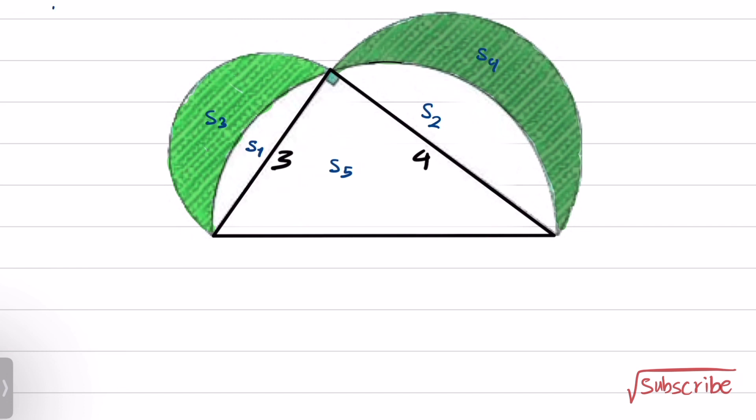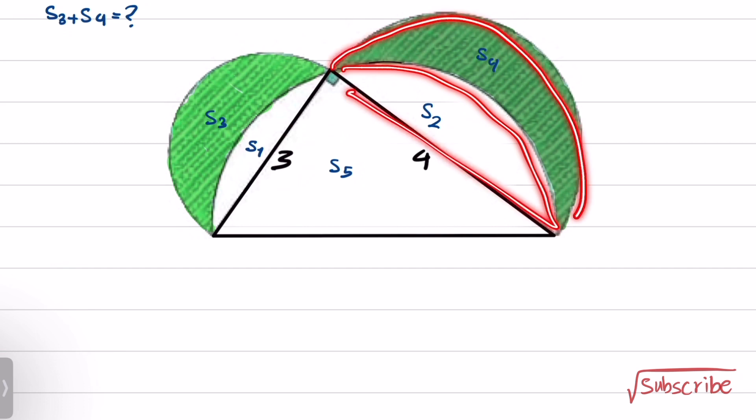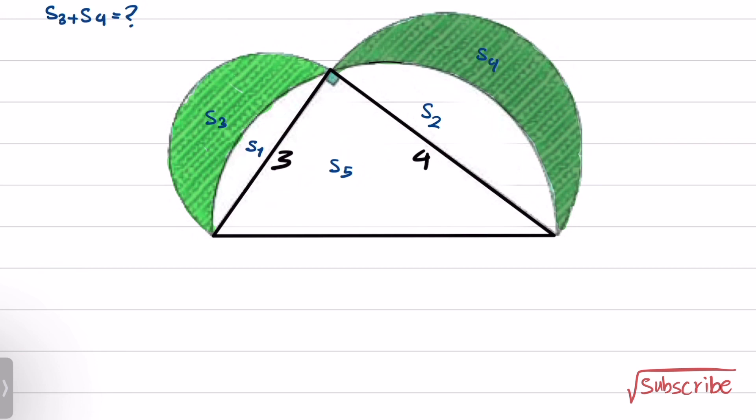The question asks for the area of S3 plus S4. If you take a look at S3 and S4, you can see that if you subtract the area S1 from the area of this half circle, you obtain S3, and if you subtract the area of S2 from this half circle, the remaining will be S4. If we obtain S1 and S2, we'll solve this problem.